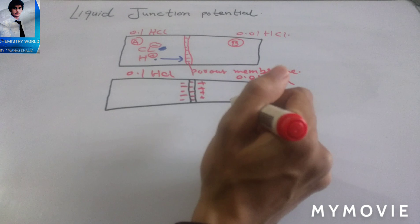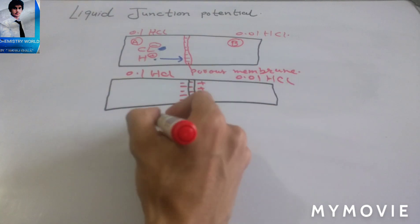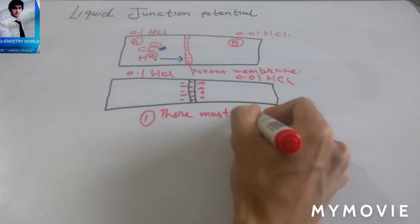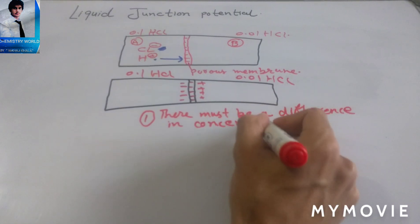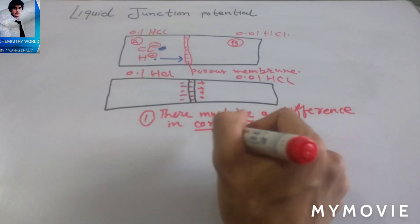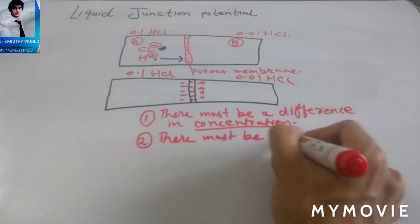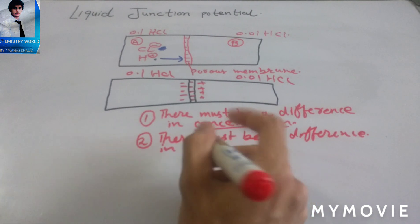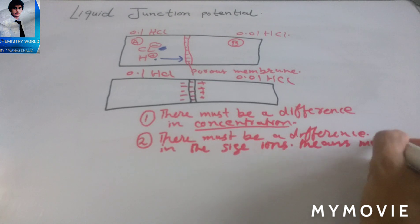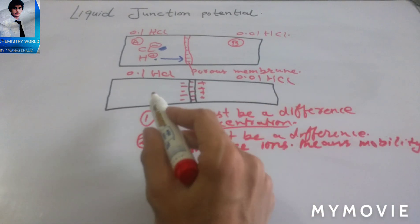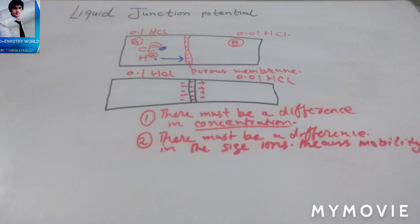We can understand this with two conditions that must be present. The first one is there must be a difference in concentrations of both electrolytes in both chambers — if there is no difference in concentration, there is no liquid junction potential. The second condition is there must be a difference in the size of ions, meaning a difference in mobilities, so one ion can move faster than the other.